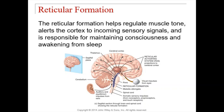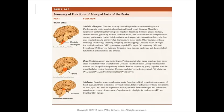That's the brainstem. To recap: the bottom portion is the medulla oblongata, the middle egg-like bulge is the pons, and the superior portion is the midbrain.